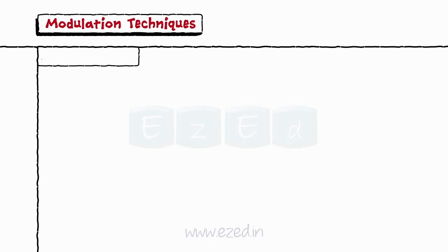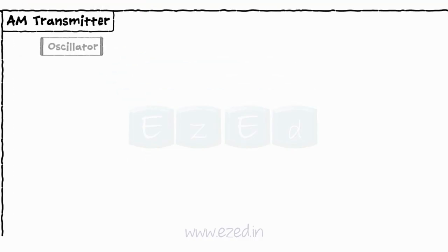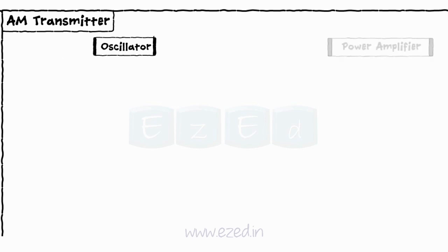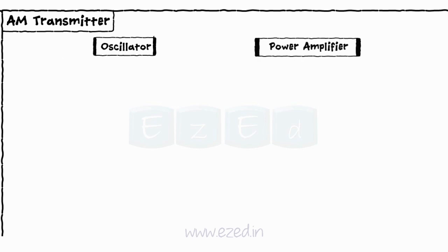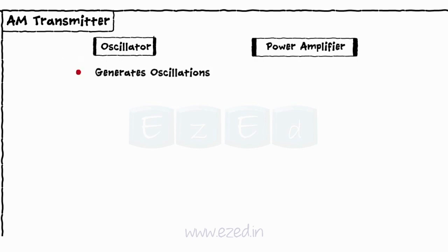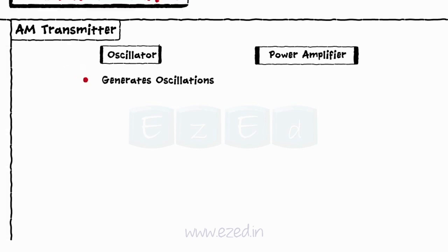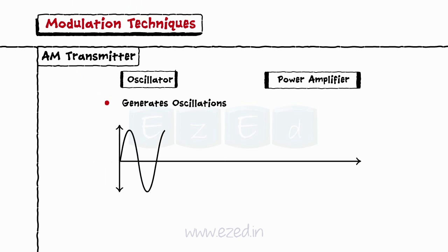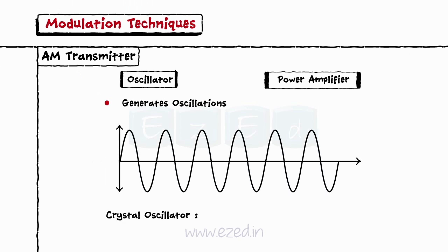Let's move on to the AM transmitter now. But first, we will learn about the oscillator and power amplifier. An oscillator is a circuit which generates oscillations — that is, it generates different sinusoidal waveforms. Crystal oscillator is the type of oscillator primarily used in AM transmitters.